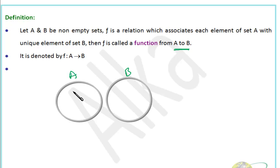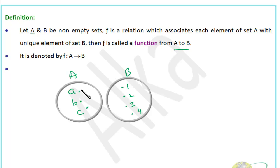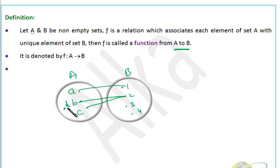I have two sets represented by circles — set A with elements a, b, c and set B with elements 1, 2, 3, 4. For a function from A to B, each element of A must be associated with one element of B. So a maps to 1, b maps to 2, and c also maps to 2 — this is a function. But if there's an extra element d in A with no image in B, it is not a function.